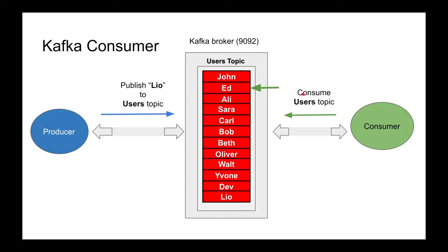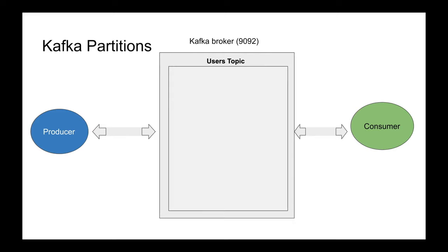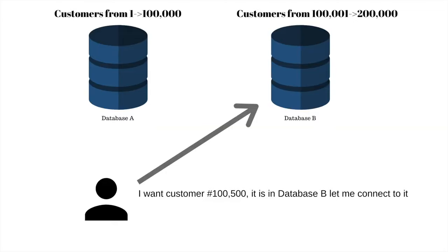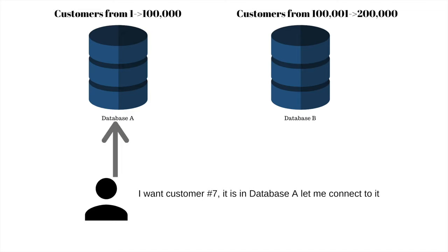Topics grow large — what do we do with databases when their tables grow to millions and millions of rows? We do sharding. Customers from number one to 100,000 go to this database; from 101,000 to 200,000 go to this other database. Clients know which database to query based on the customer ID. That's essentially the concept of sharding, and Kafka borrowed that concept.